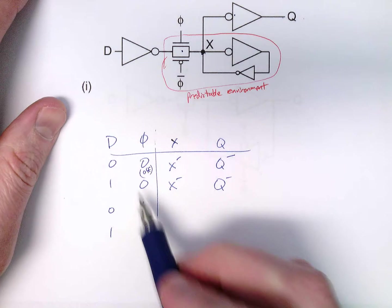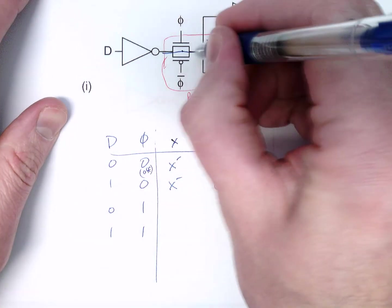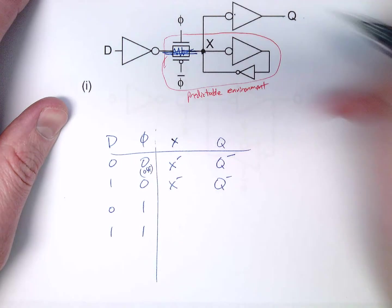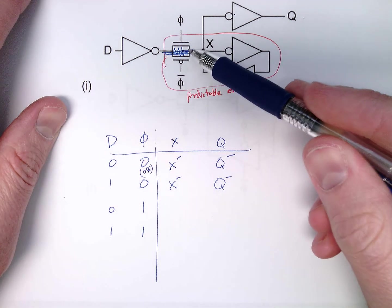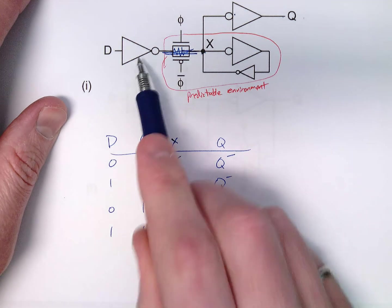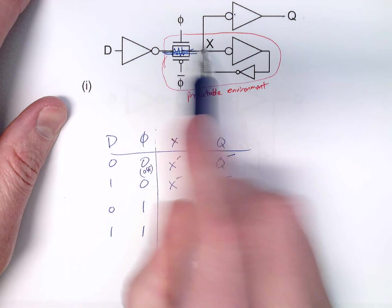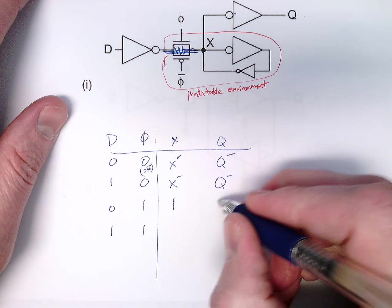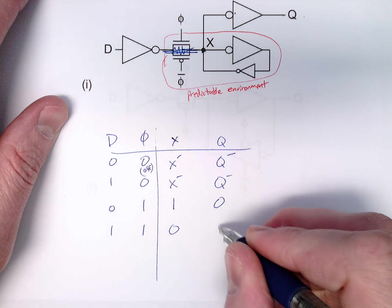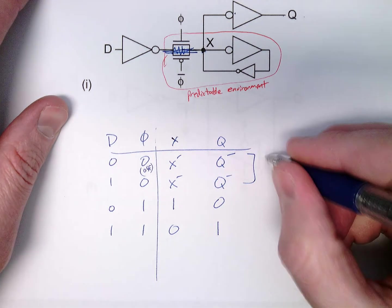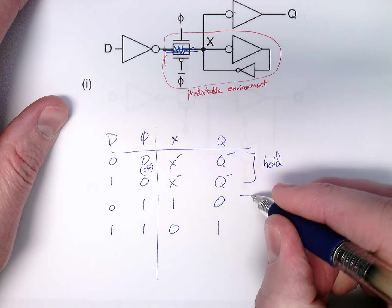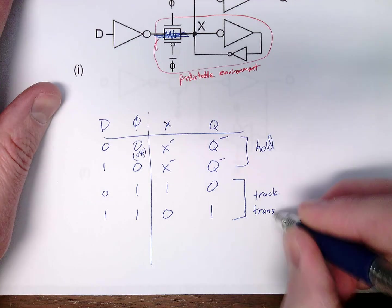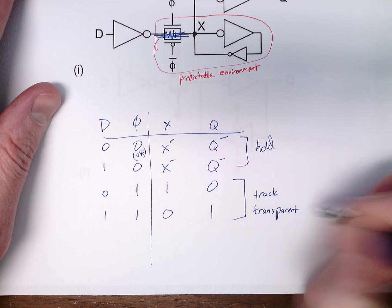All right, now when our clock is high, the switch is closed. You can view it like a short circuit. Better it's to view it like a resistor in series. Okay. That's good for our RC time constants. And then node X, D is zero. This is one. This is connected. So X is a one. X is a one. We have inverted. We're back to a zero. Same thing, zero and one. So this is hold mode. And this is track mode, or transparent.